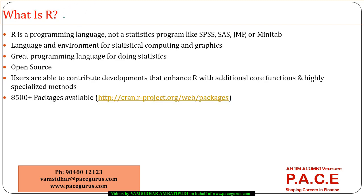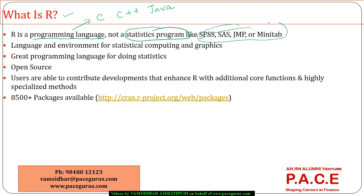Just to get an initial overview — what is R? It is a programming language. There is a very common misconception among people that it is a statistics program, that it is like SPSS or SAS. But no, it is not. It is a proper programming language like C, C++ and Java. It is not a statistics tool like SPSS, SAS, Minitab or any other.